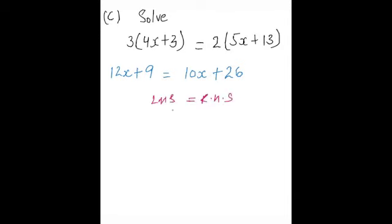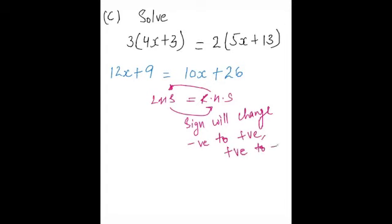Now same method: left hand side and right hand side. From here to here, the sign will change. You can see how important this parameter is: how you have to change the sign from negative to positive if you move from left to right or right to left, and positive to negative. This is the most important thing in doing algebra.